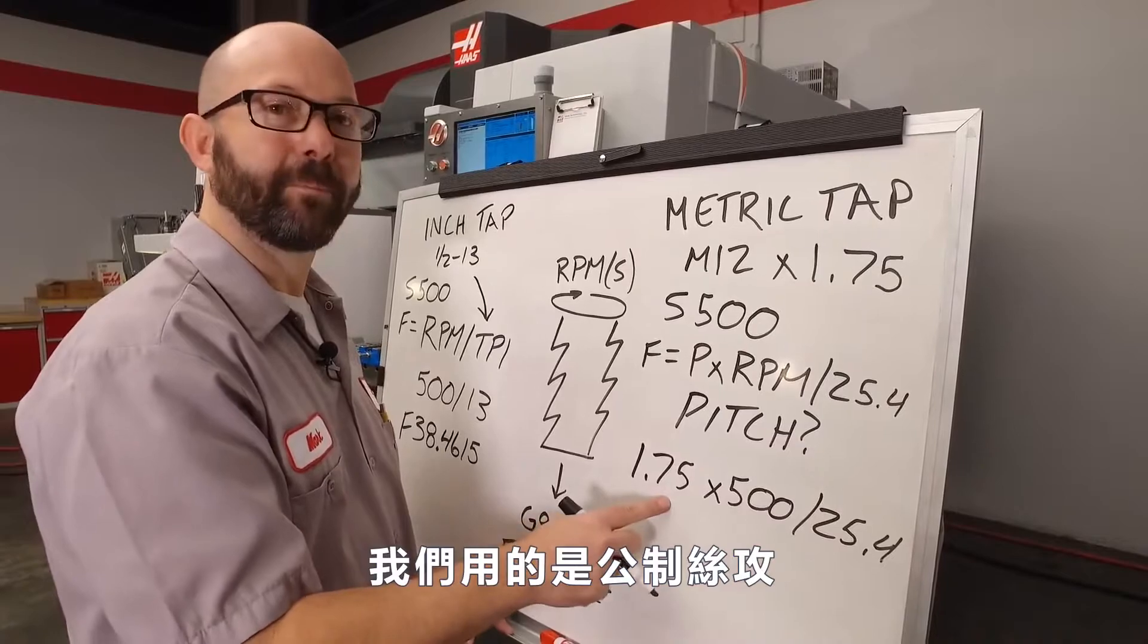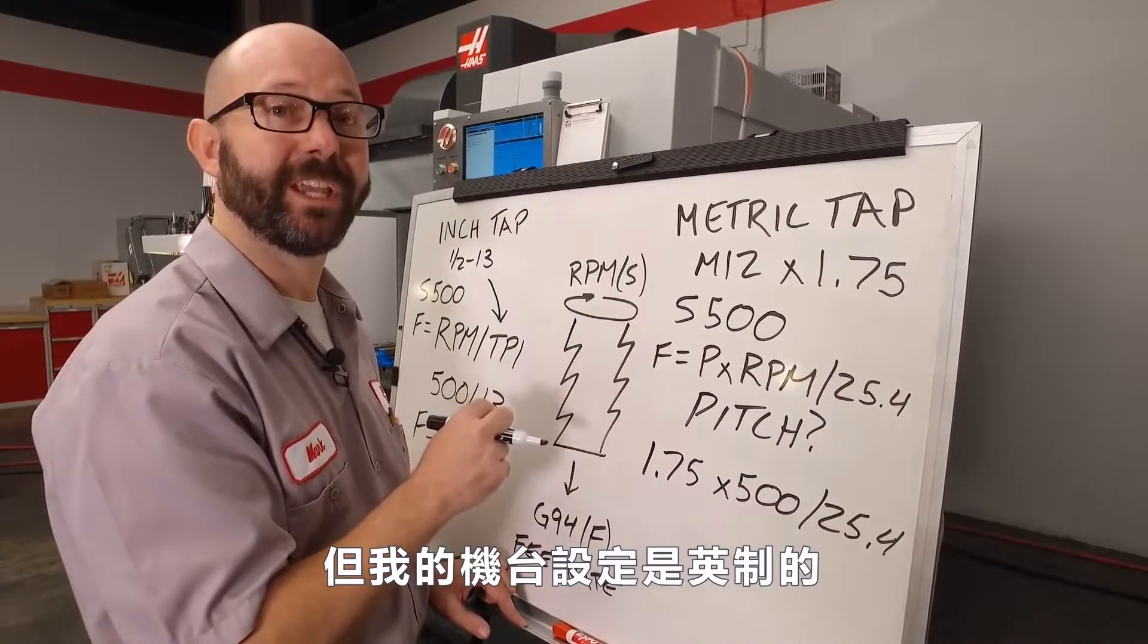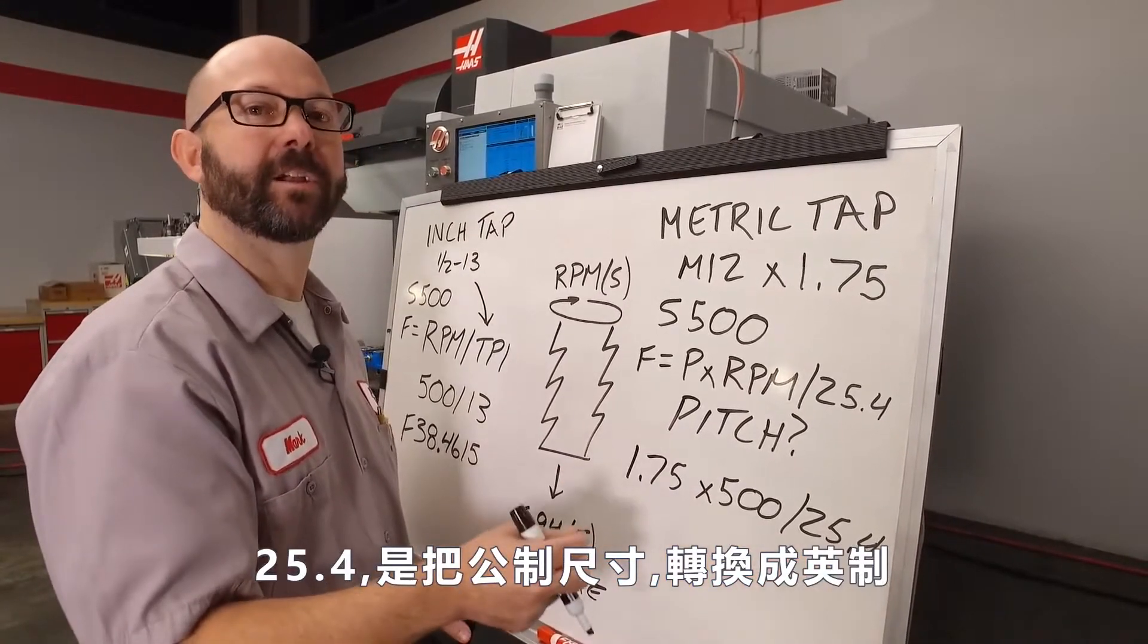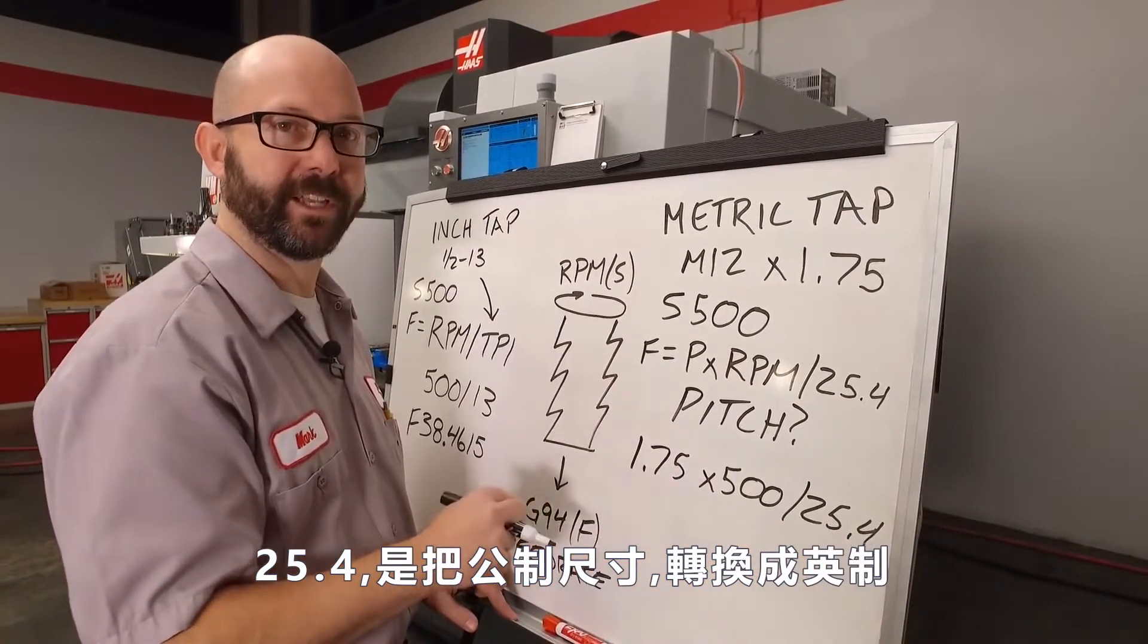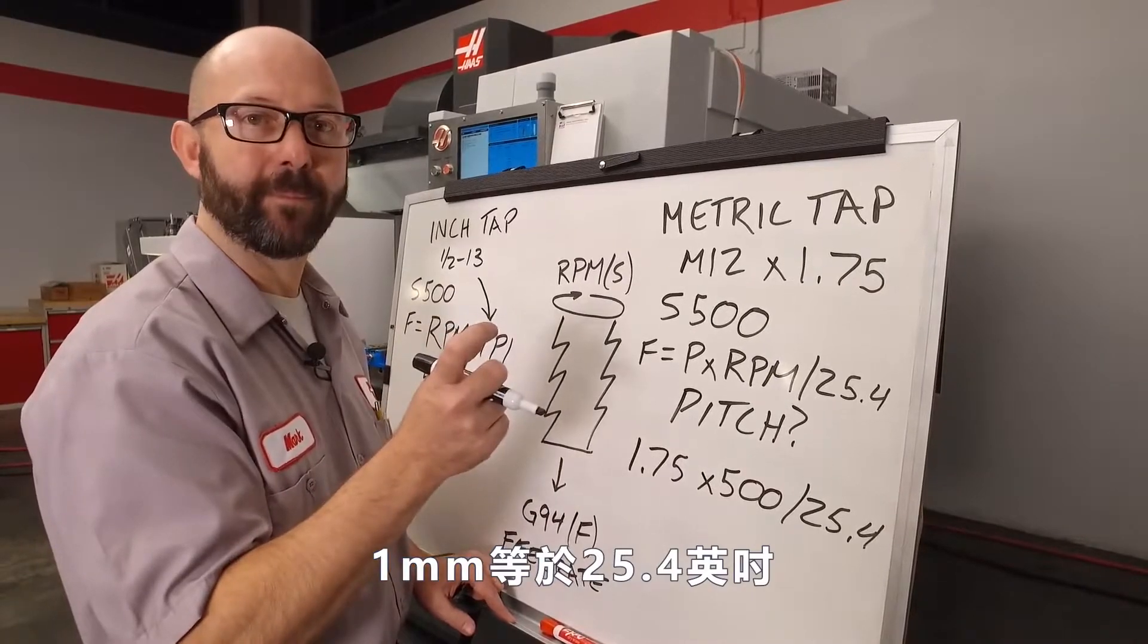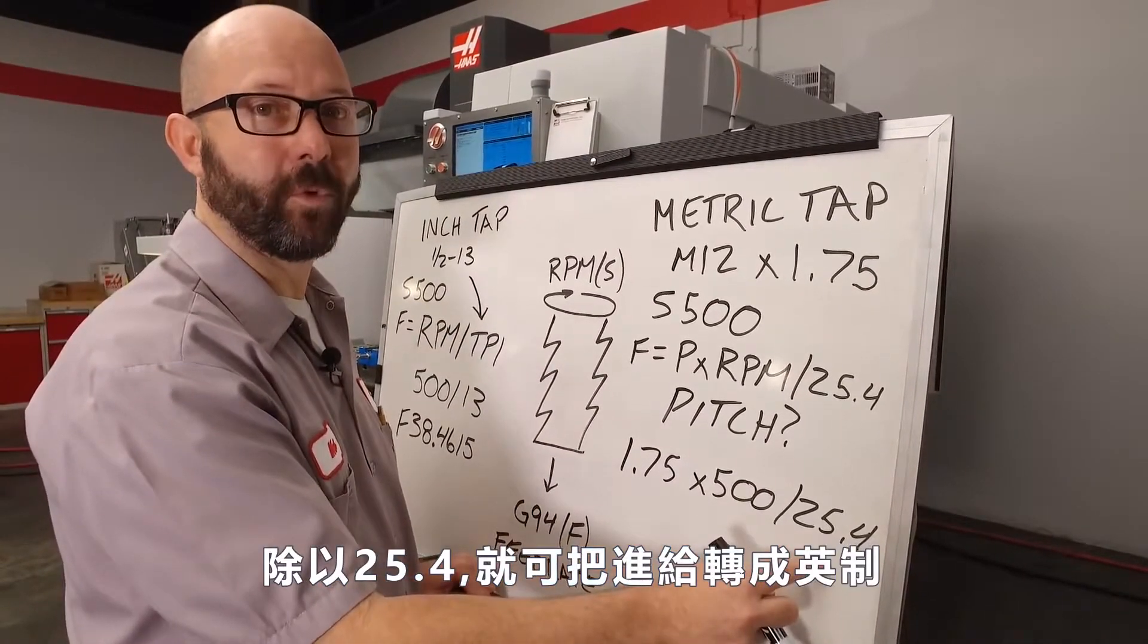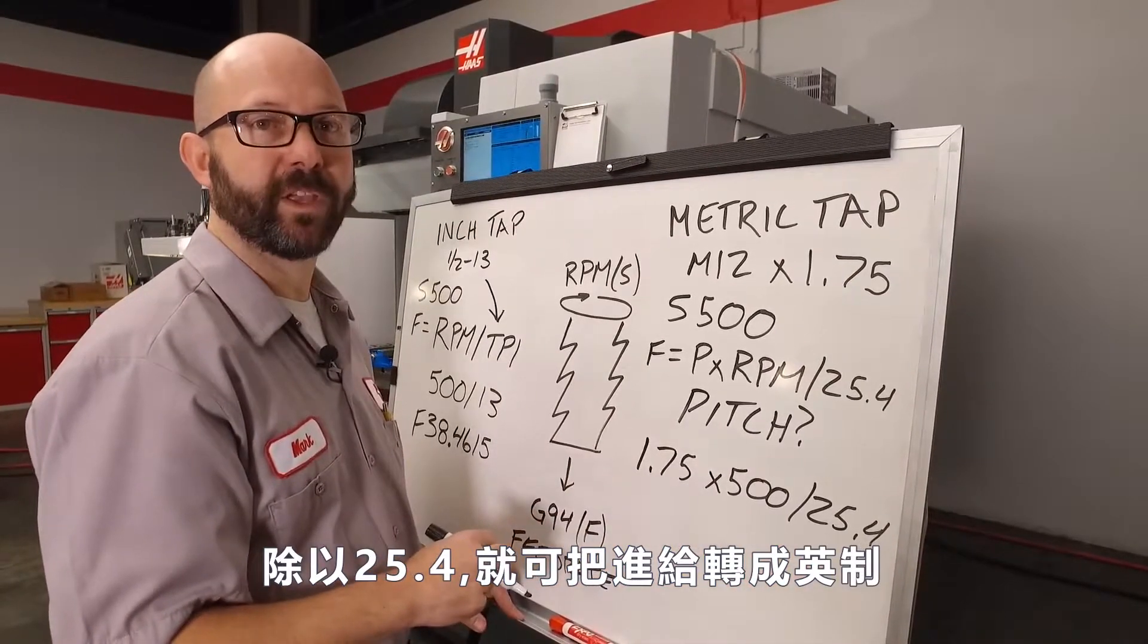And 25.4 is... Where did the 25.4 come from? Well, our pitch for a metric tap is in millimeters. And my machine is in inch mode. The 25.4 is there to convert my millimeters into inches. There are exactly 25.4 millimeters per inch. So by dividing by the 25.4, we're converting it into a feed rate that we can use.